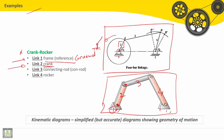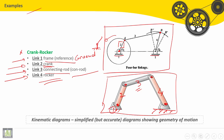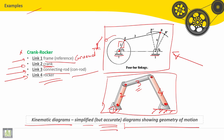Link number two is joined with link number three, also with a revolute. Link number three is called the connecting rod, and it is joined also with link number four with a revolute. Link number four is the rocker, and it is also joined with link number one, the ground, with a revolute. We can see this kinematic diagram is very simple and easy to be drawn. Kinematic diagrams are simplified but accurate diagrams showing the geometry of motion, making it easy and fast to achieve the kinematic analysis of a mechanism.